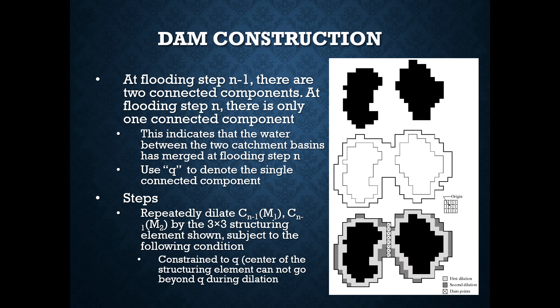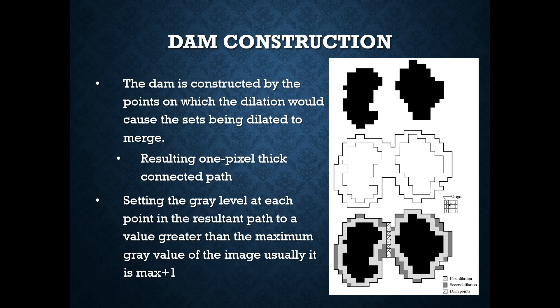We move on to the steps involved in this morphological and dam construction. Repeatedly dilate C of M1 and C of M2 by the 3 by 3 structuring element shown, subject to the following condition: Constraint Q, the center of the structuring element cannot go beyond Q during dilation. The dam is constructed by the points on which the dilation would cause the sets being dilated to merge.